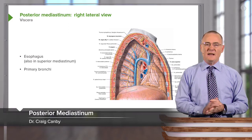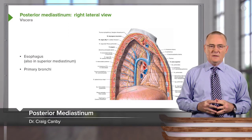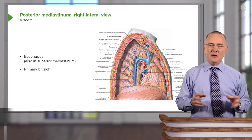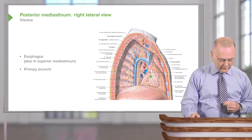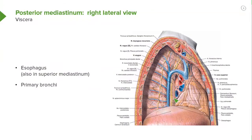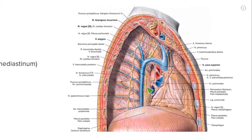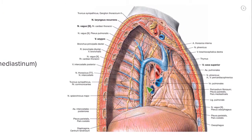The posterior mediastinum — this region will house the esophagus. We have the esophagus extending from the superior mediastinum into the posterior mediastinum. We can also see the divisions of the trachea within the posterior mediastinum. Here in this right view we see the right bronchus, and on the left side we would have the left bronchus.